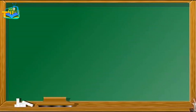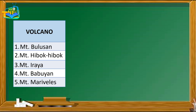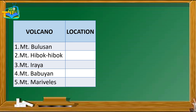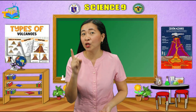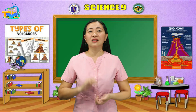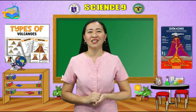The table is divided into three columns: first, list of volcanoes; second, location; and third, types of volcano. Put a check mark to classify it. Answer and copy the given table on a separate piece of paper. I will give you 5 minutes to finish this activity.